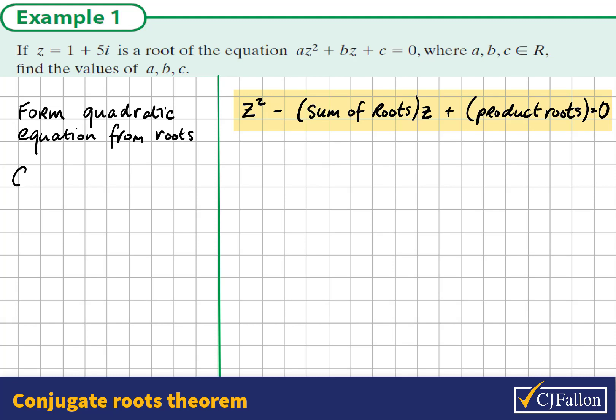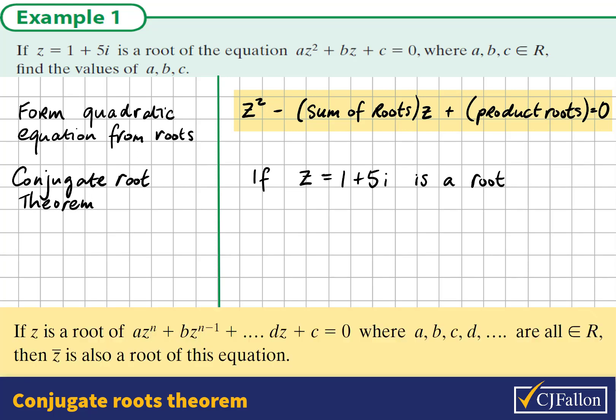We're given one of the roots: z equals 1 plus 5i. According to the Conjugate Roots Theorem, we also know another root. If z equals 1 plus 5i is a root of an equation, and as long as a, b, and c are real, then the conjugate of z, which is 1 minus 5i, must also be a root of the equation.